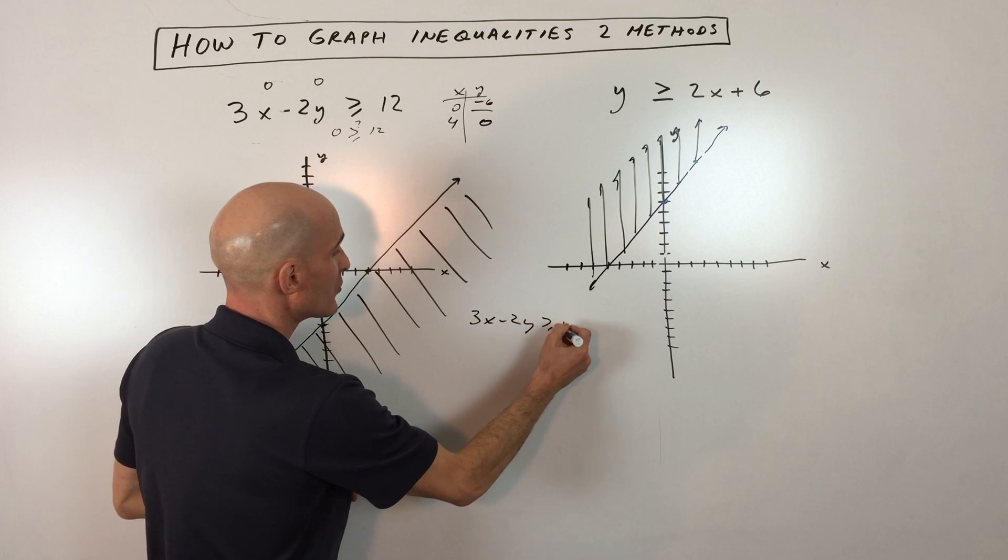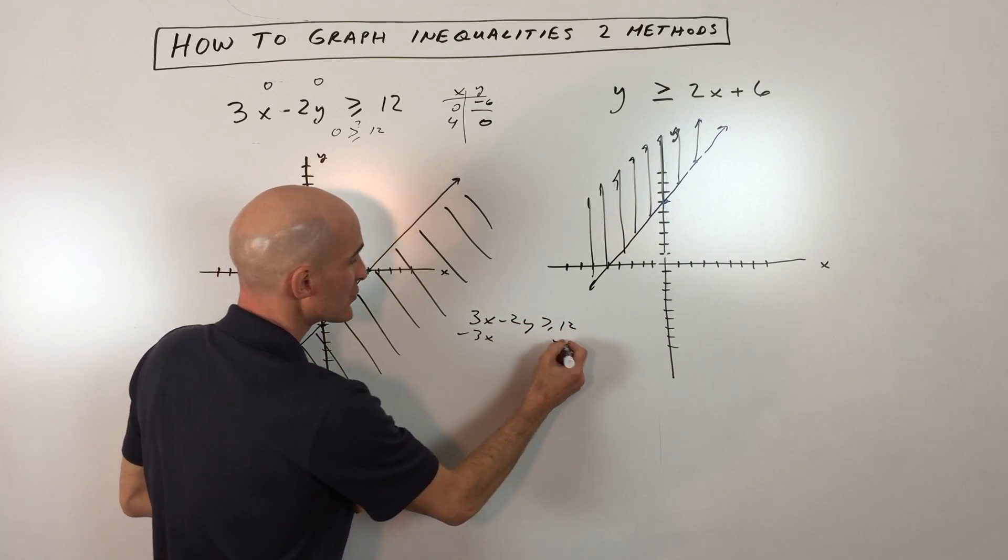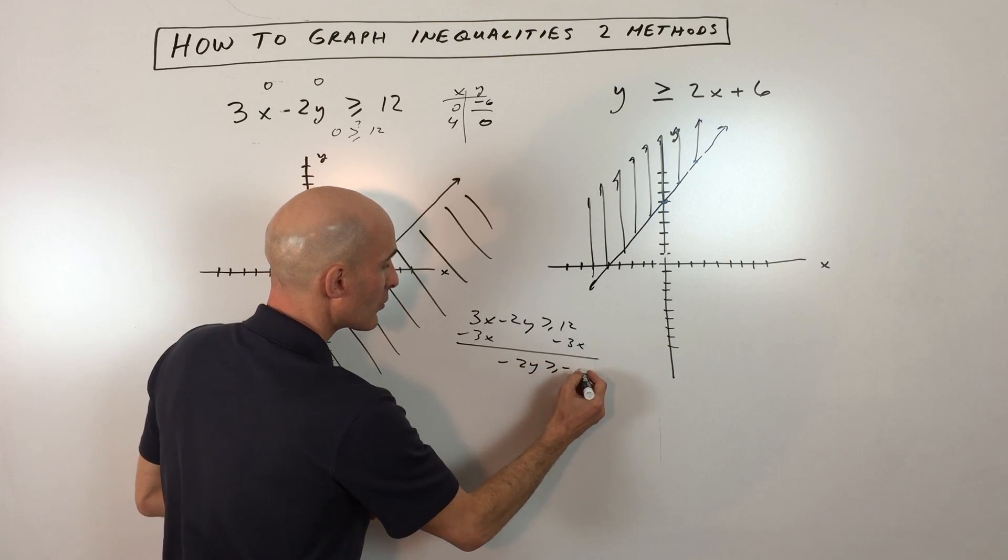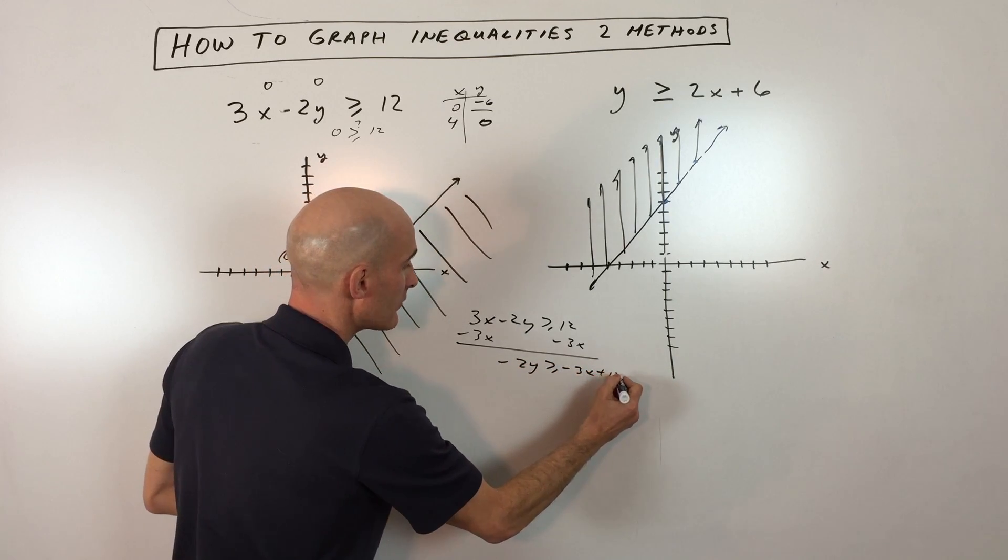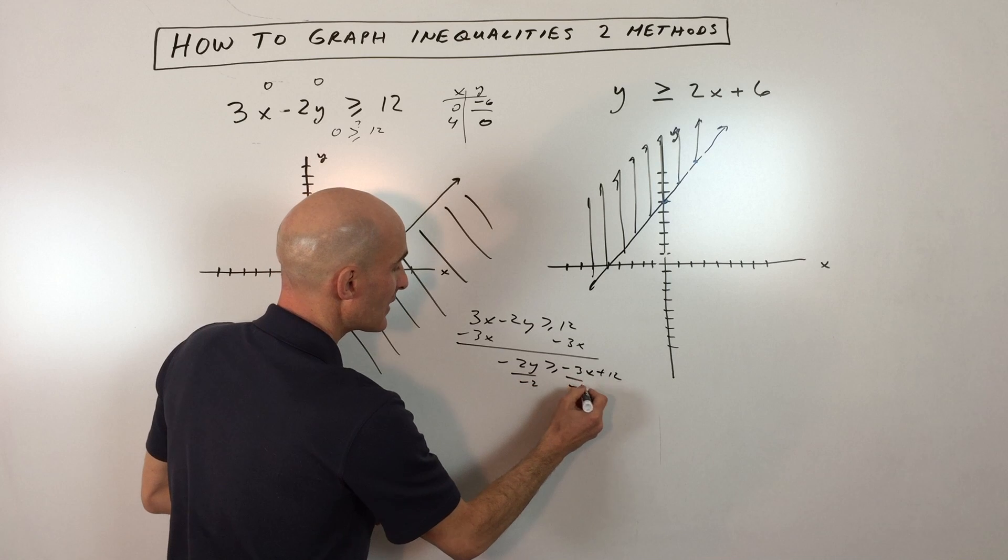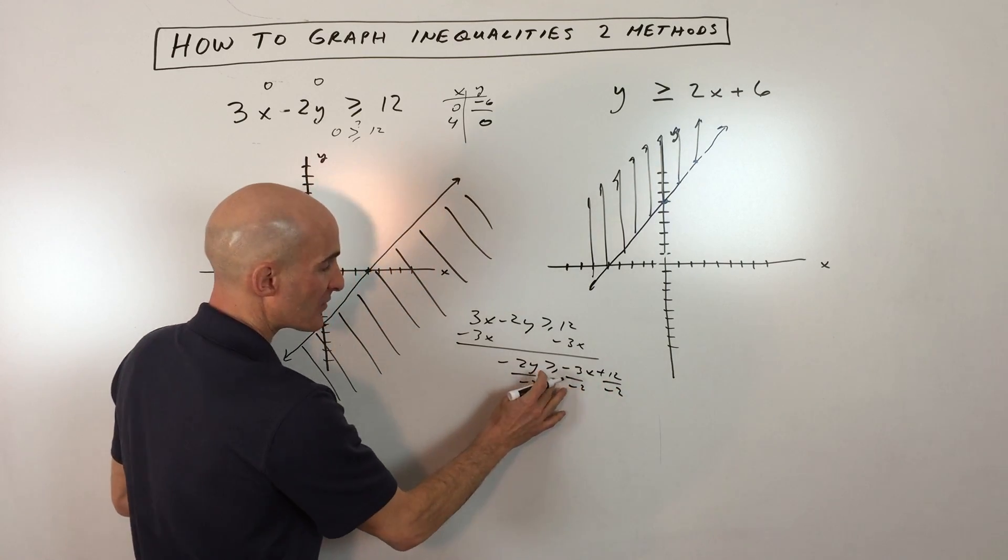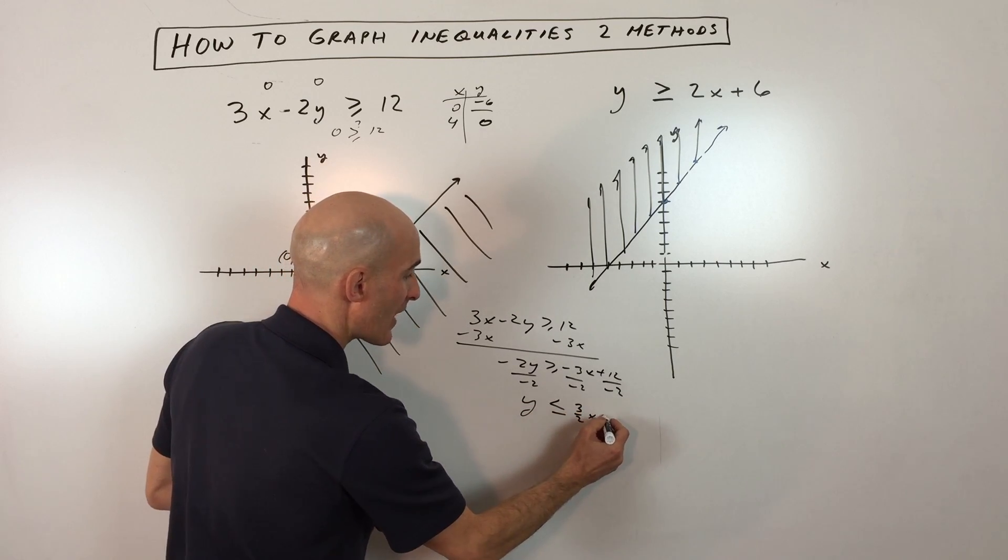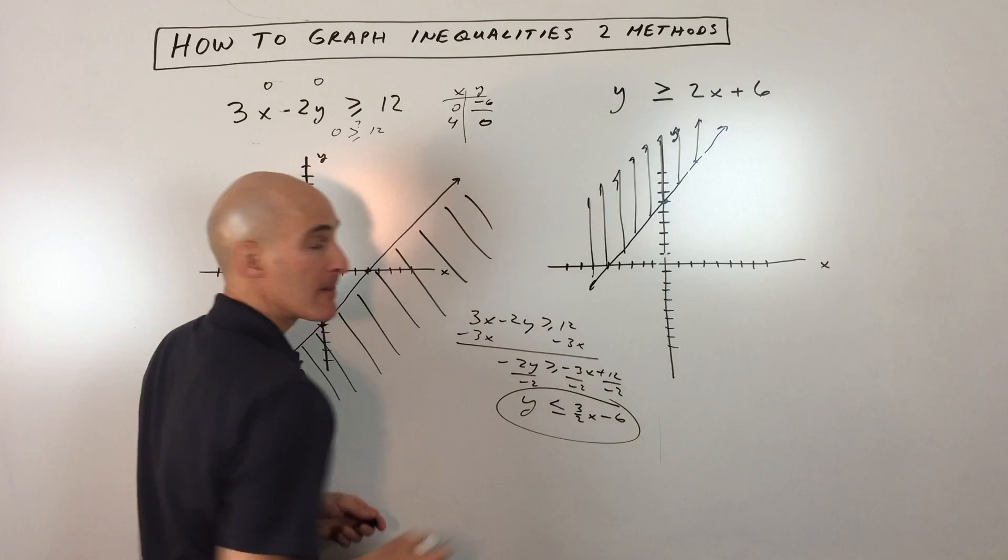3x minus 2y is greater than or equal to 12. So I'm going to subtract 3x from both sides. Okay, so that comes out to negative 2y is greater than or equal to negative 3x plus 12. I'm going to divide everything by negative 2, left and right sides. When I do that, this inequality sign changes direction. And now we have y is less than or equal to 3 halves x minus 6.